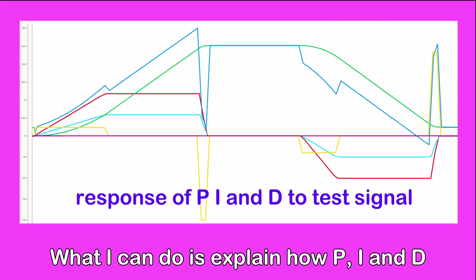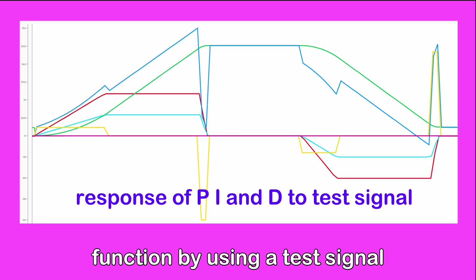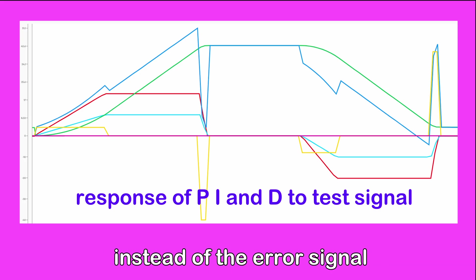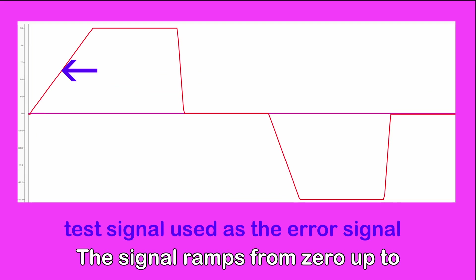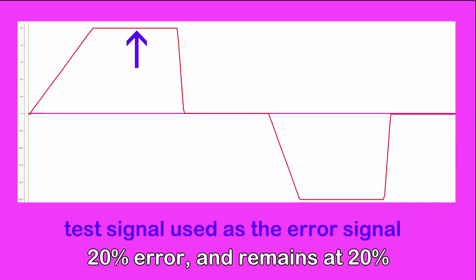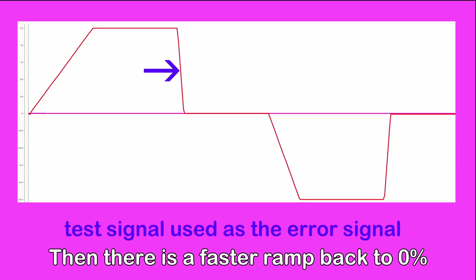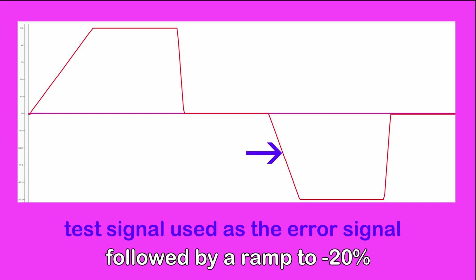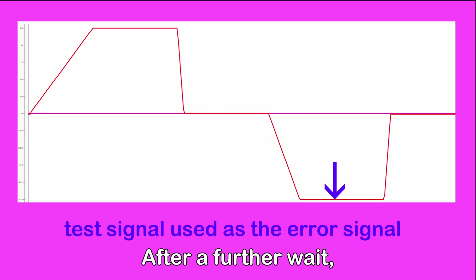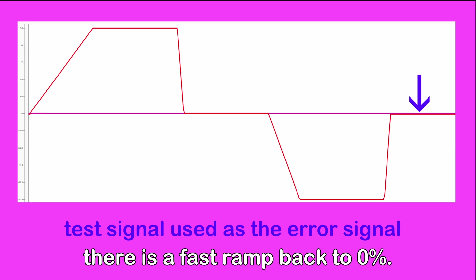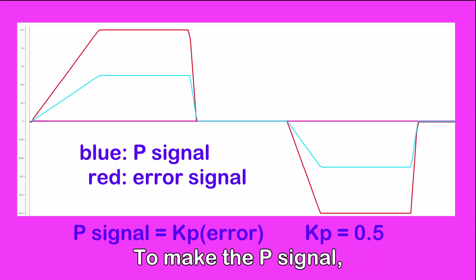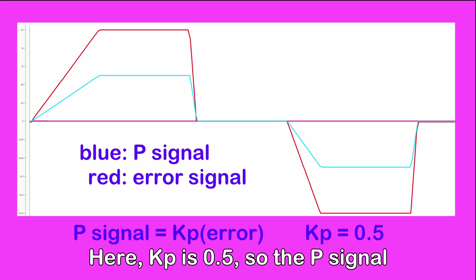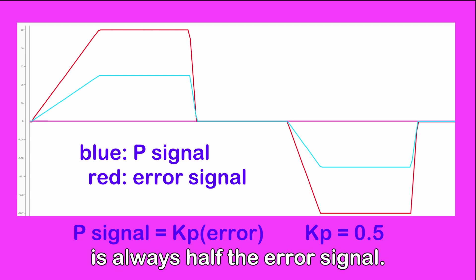What I can do is explain how P, I and D function by using a test signal instead of the error signal from the light sensors. The signal ramps from 0 up to 20% error and remains at 20% for a few seconds. Then there is a faster ramp back to 0% with a short wait followed by a ramp to minus 20%. After a further wait, there is a fast ramp back to 0%. To make the P signal, you multiply the error by KP. Here KP is 0.5, so the P signal is always half the error signal.